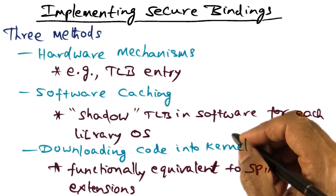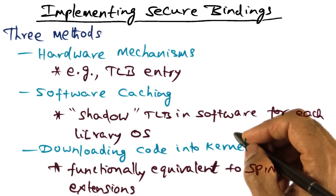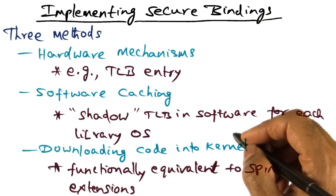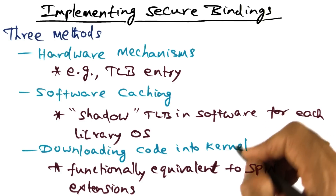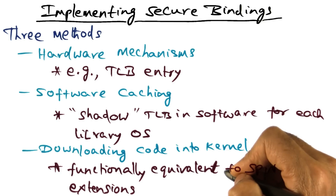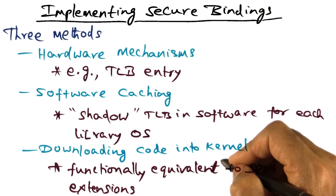Similarly, in the exo-kernel world, a library operating system can, if allowed by exo-kernel, securely download code into the kernel that will get executed under specific conditions laid down by the library operating system.